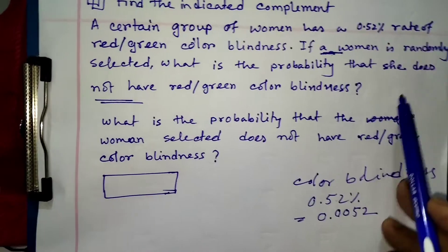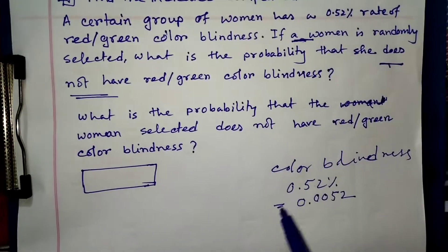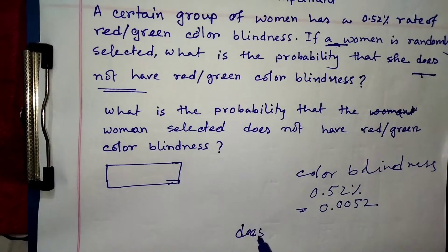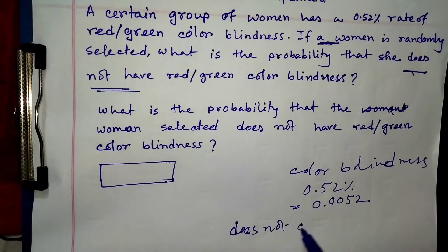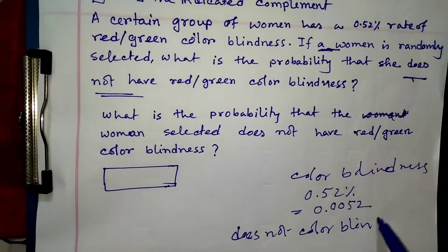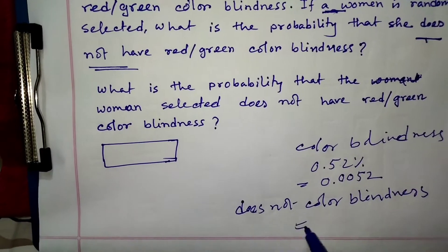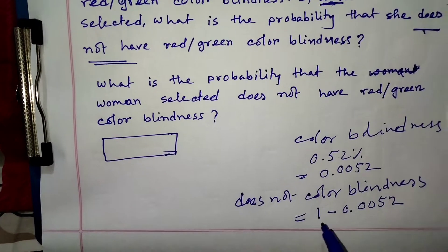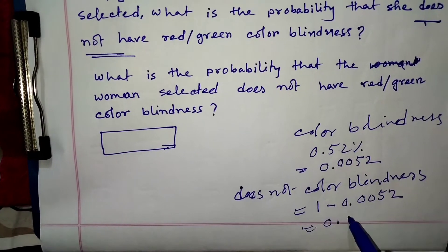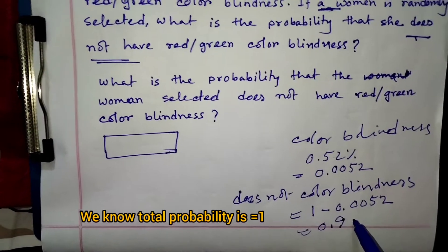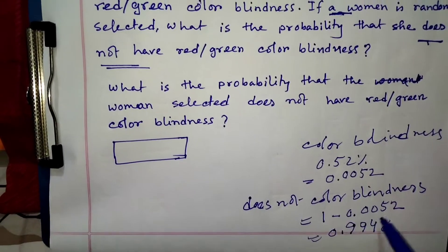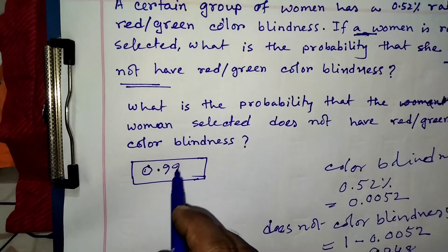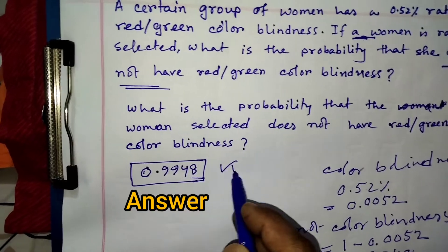So, she does not have color blindness. We can get: does not have color blindness equals 1 - 0.0052, so we get 0.9948. Now we get the answer. I have got the answer 0.9948. This is our answer.